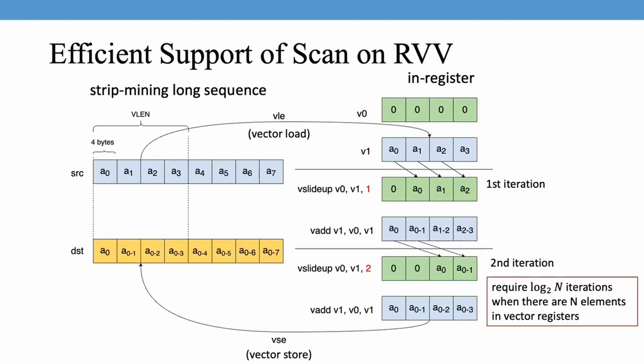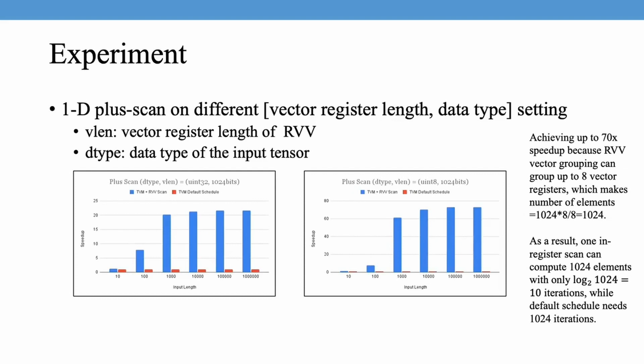Here are the experiment results of our support of scan with RVV. For 32-bit unsigned integer, we achieve up to 20 times speedup compared to the default schedule. For 8-bit unsigned integer, we achieve up to 70 times speedup, because the default schedule requires 100 times more iterations than the RVV version. The speedup is highly scalable with respect to the number of elements that can fit inside the vector register.